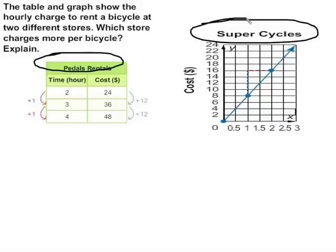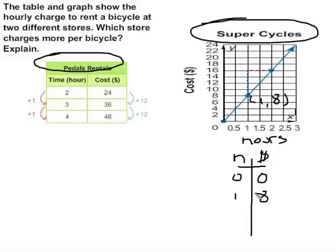Well Super Cycles is not set up for us in table form. But we know that we are going to have our hours on the x-axis and our cost on the y-axis so we can come up with a table here. So let's go with hours and money. I know at zero hours, I am going to pay $0. But I know that at one hour, it's gonna cost me $8. At two hours, it's gonna cost me $16. And finally, three hours cost me $24. So I need to find a constant rate of change for both of these.